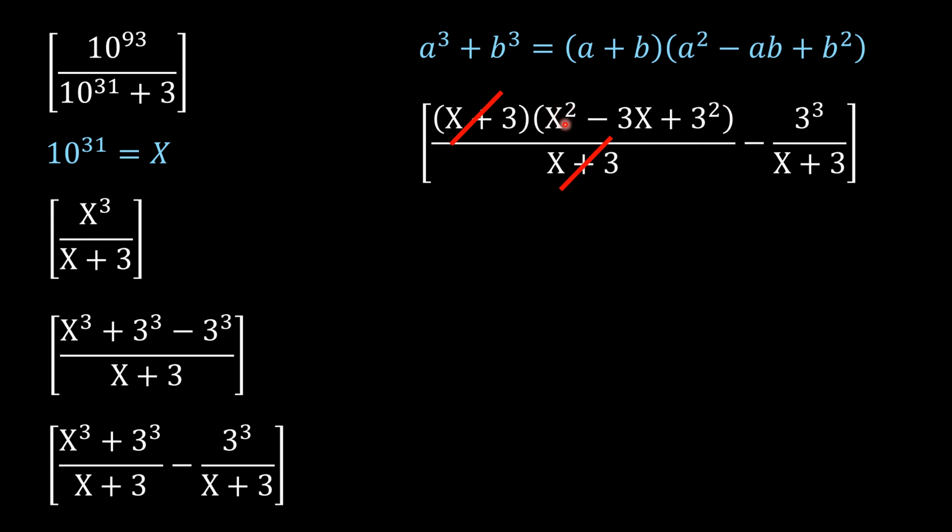X² is 10 raised to the power of 62 minus some value, so this will be some integer. If there is any integer plus some other value in a floor function, we can take that integer out.